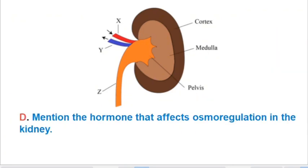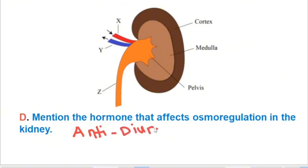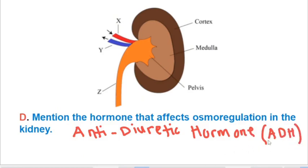We now move on to question D: mention the hormone that affects osmoregulation in the kidney. The hormone that affects osmoregulation in the kidney is the antidiuretic hormone — or ADH for short. However, write the full name: antidiuretic hormone. This hormone is responsible for maintaining the water levels in the body.